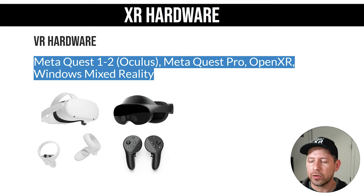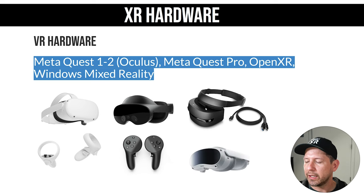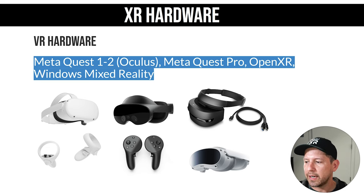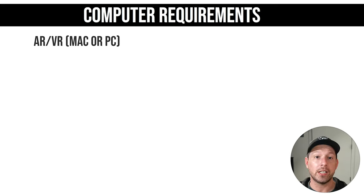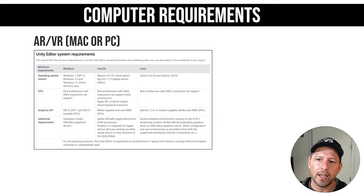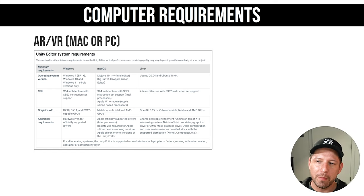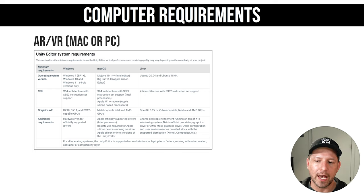Computer requirements are hard to define because no single solution satisfies both AR and VR development needs. Looking at Unity Editor system requirements: on Windows — which I really recommend for all things XR — you can use Windows 7, 10, or 11, with an X64 CPU architecture and DirectX 10, 11, or 12 graphics API. On macOS, you need Mojave 10.14 or greater, or Big Sur 11.0 with Apple Silicon. On Linux, you can use Ubuntu with an X64 instruction set. I really recommend using a PC because it provides a wider level of support and more tools, especially for Meta development.